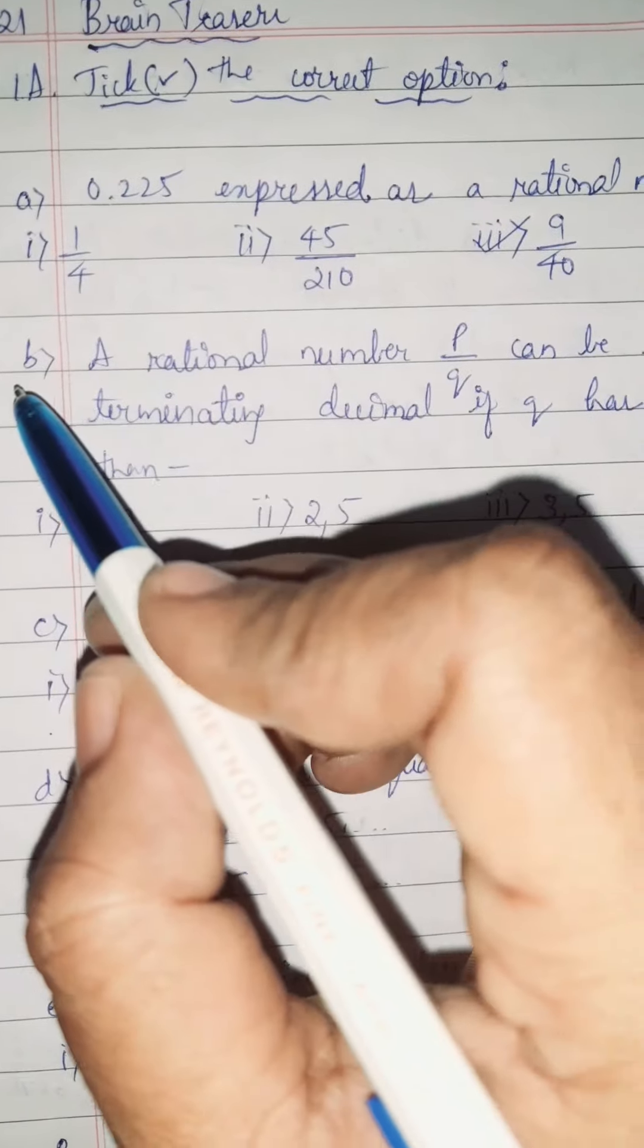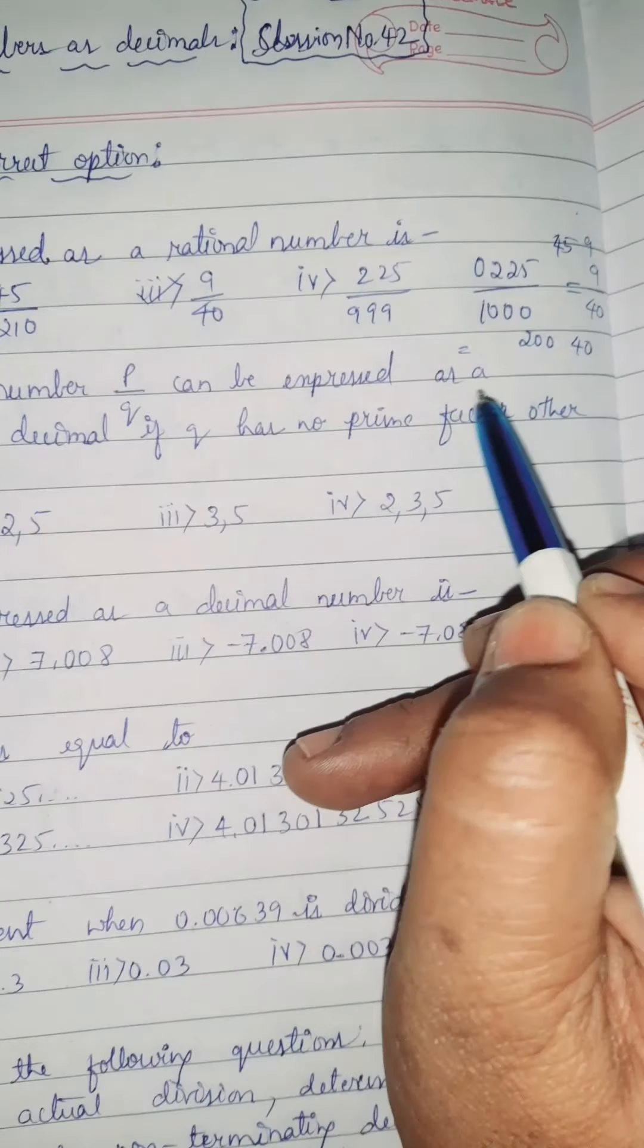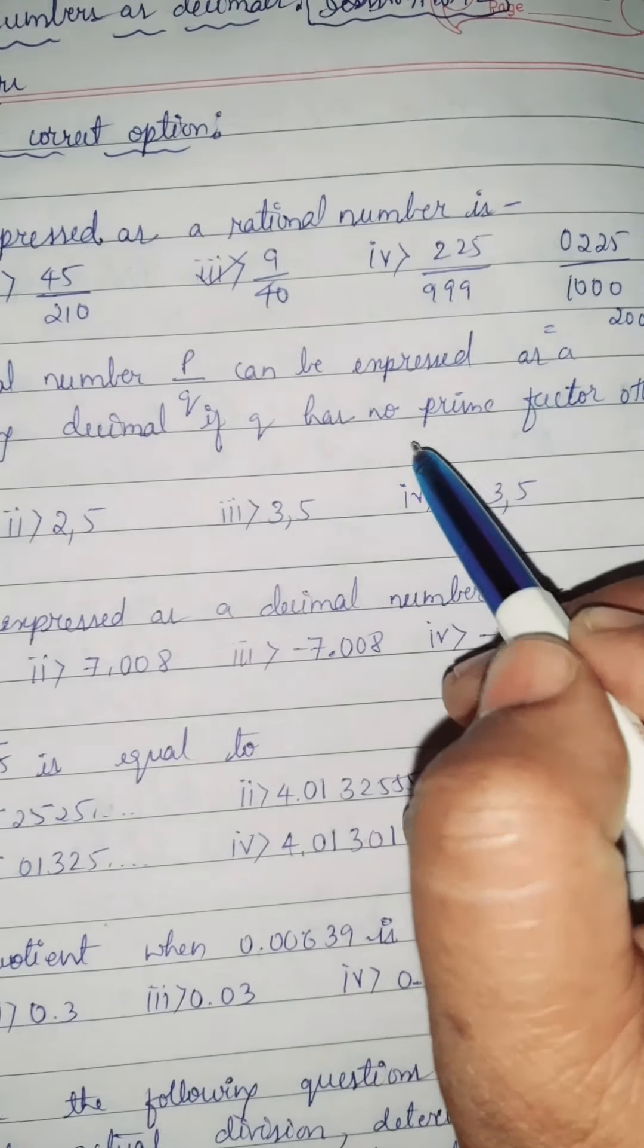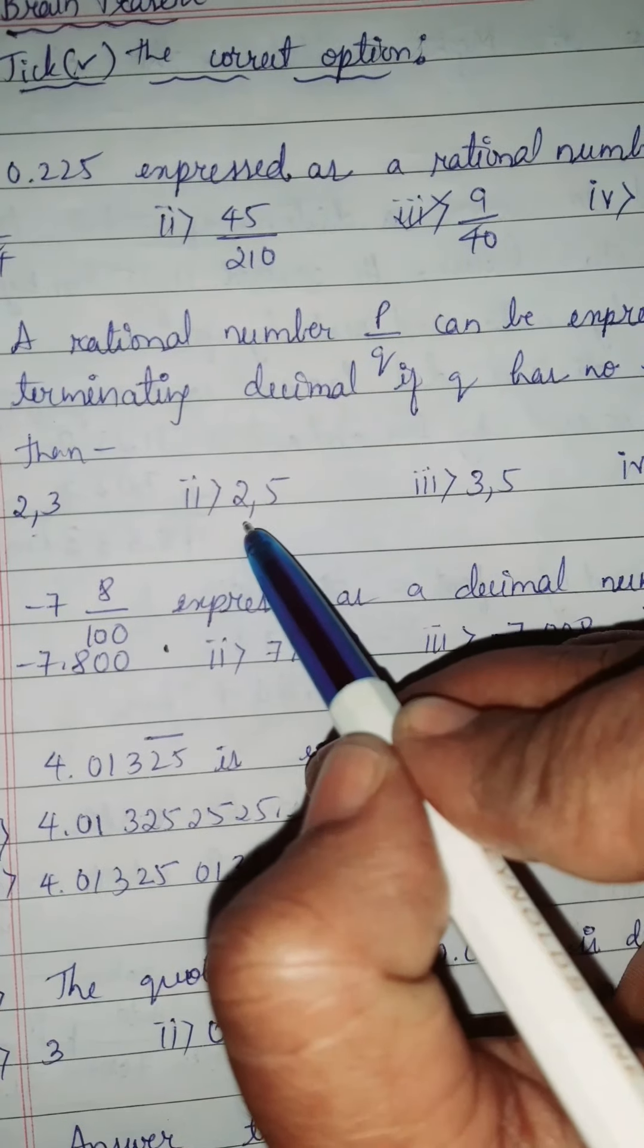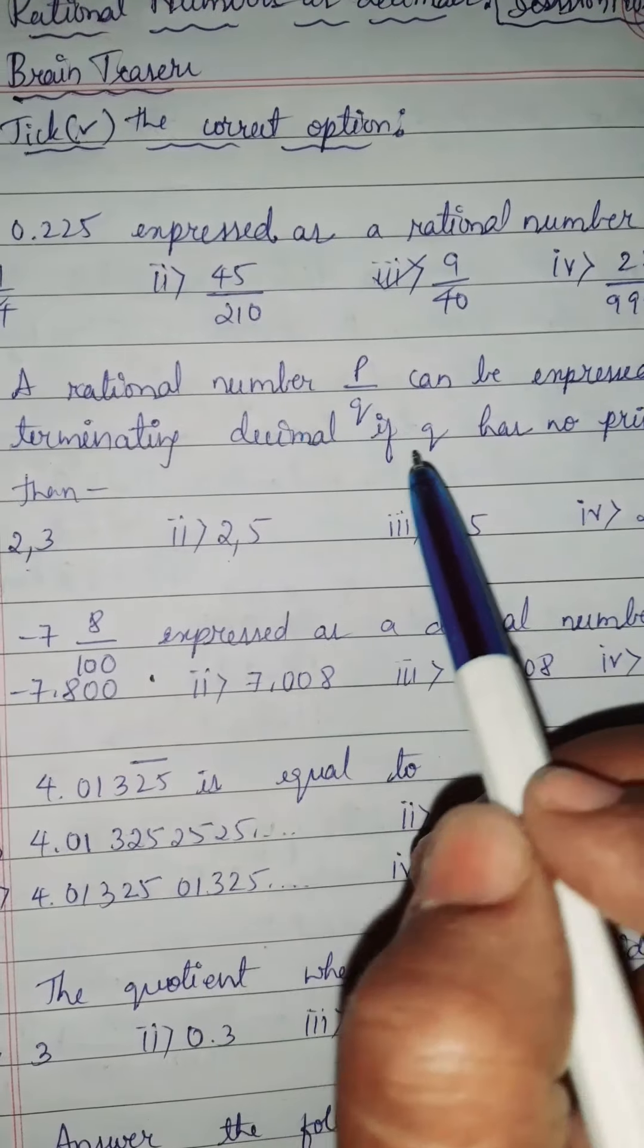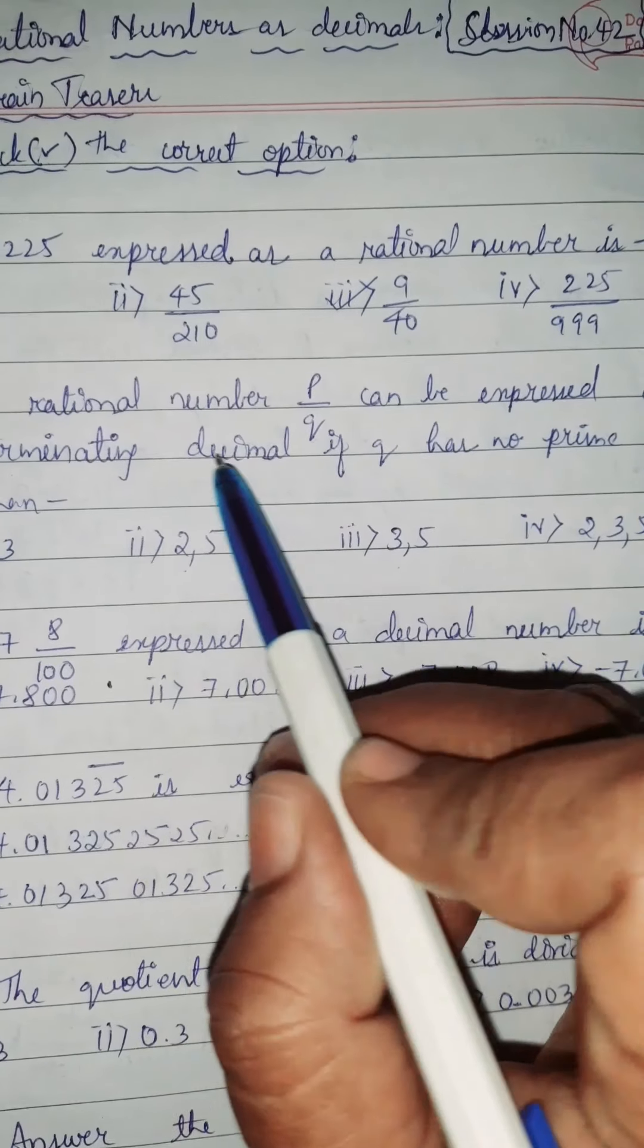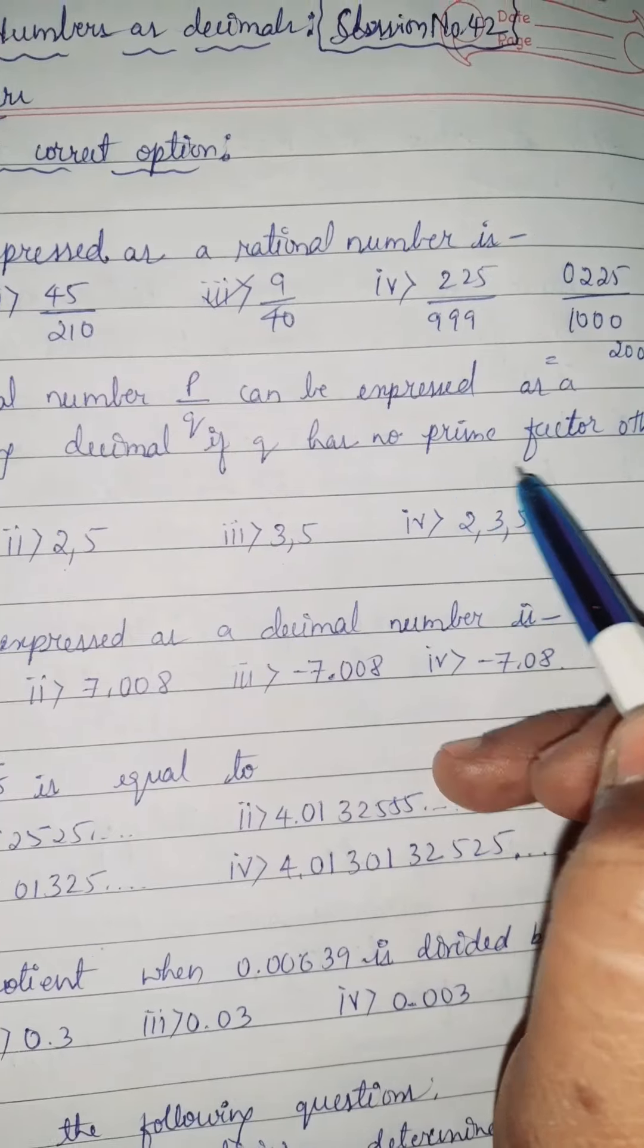Next is question number B. A rational number P by Q can be expressed as a terminating decimal if Q has no prime factor other than: 2 and 3, 2 and 5, 3 and 5, or 2, 3, 5. To find out whether the given rational number can be expressed as a terminating decimal, it should have no prime factor other than 2 and 5.